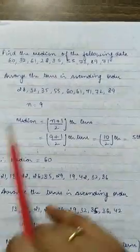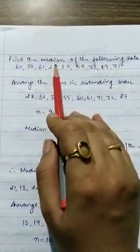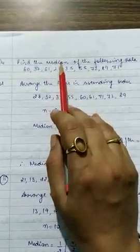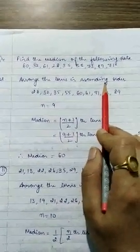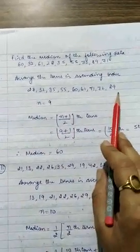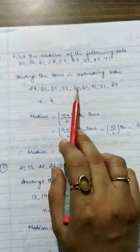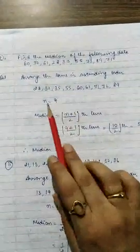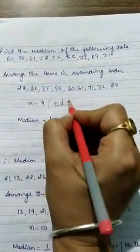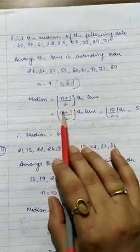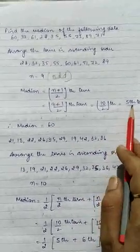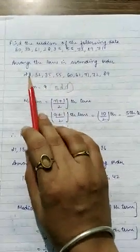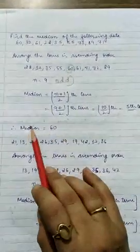Next question, question number 4. Find the median of the following data. Median means mid value. When we have to calculate the median, first of all we will arrange the terms either in ascending or descending order. We will arrange the terms in ascending order, from smaller to bigger. Next, count the number of terms: 1, 2, 3, 4, 5, 6, 7, 8, and 9. So these are 9 terms. N equals 9. 9 is odd. If it is odd, then median will be n plus 1 by 2. This is the term we have to take. So 9 plus 1 by 2, 9 plus 1 is 10 by 2, 10 by 2 means 5th term. Which is the 5th term? 1, 2, 3, 4, and 5. So this is our 5th term. Our median will be 60.